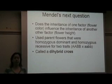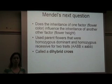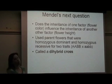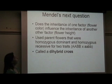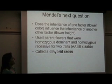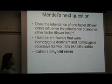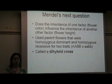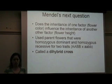Before Mendel investigated the inheritance of one trait through the pea plants, his next question was: does the inheritance of one factor, for example flower color, influence the inheritance of another factor, like flower height? So he used parent flowers that were homozygous dominant and homozygous recessive for both traits, and he called it a dihybrid cross. Remember that the monohybrid cross followed one trait, so the dihybrid cross follows two traits.